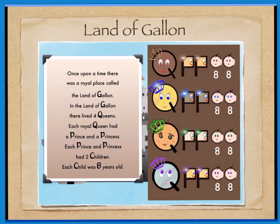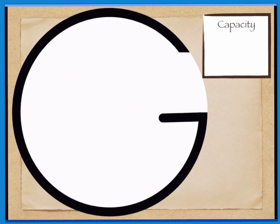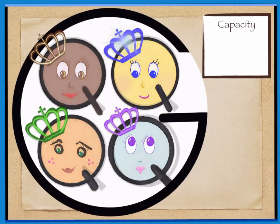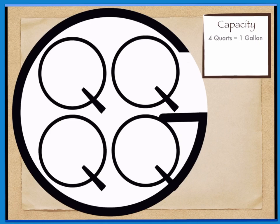Now how does knowing about the Land of Gallon help us learn about capacity? Let's find out! The G in Gallon stands for the largest unit of measurement in capacity. You guessed it, the gallon. Remember the four queens in the Land of Gallon? Each Q stands for the next largest unit, the quart. There are four quarts in one gallon.